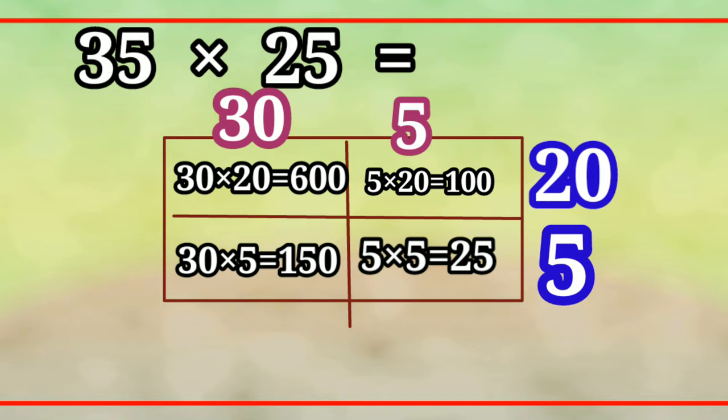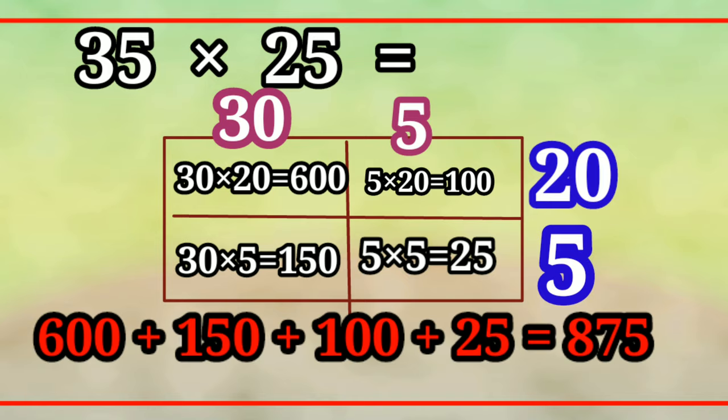We will do this more simple. We will add the box method: 600 + 150 + 100 + 25. Total: 875.